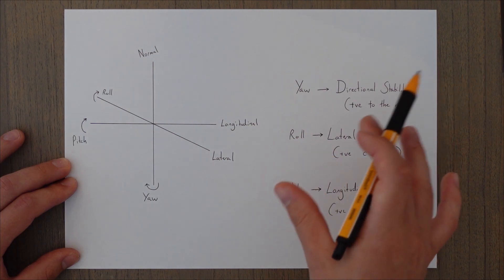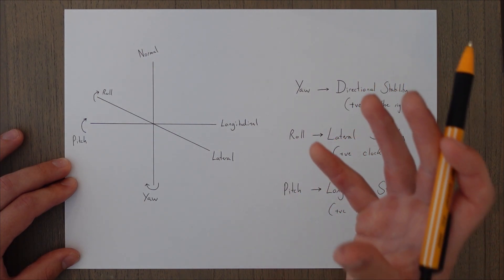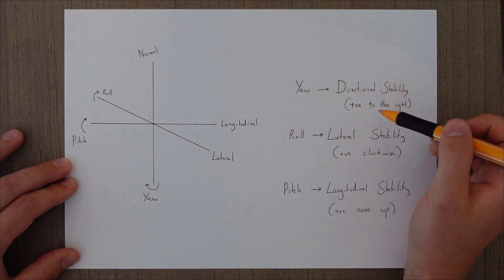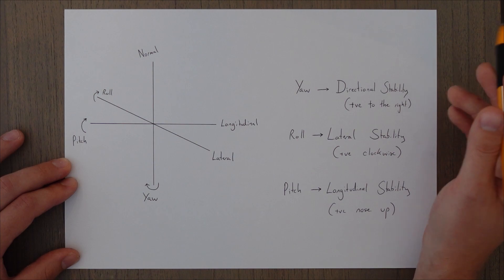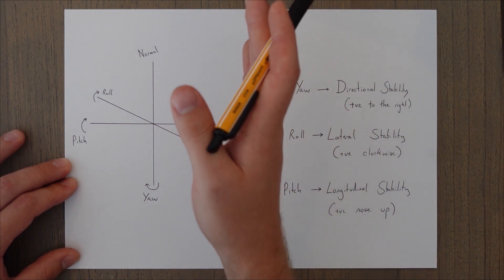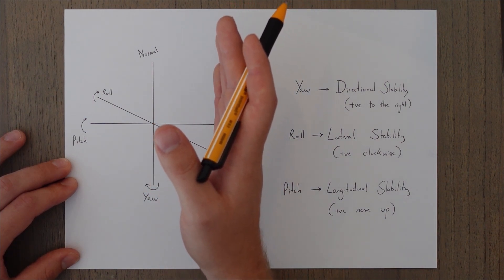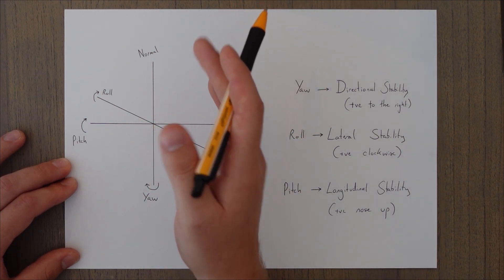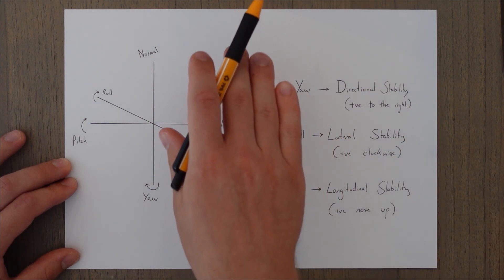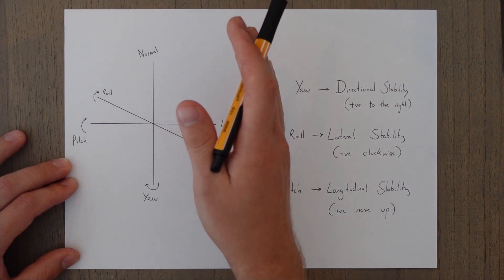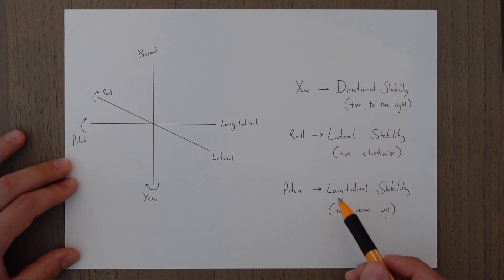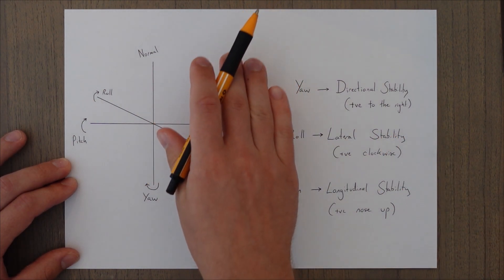In the next class we'll look at stability moments. It's important to note that positive is to the right for directional stability, always from the pilot's perspective. So if heading along and you get a corrective moment to the right clockwise, that's a positive corrective moment. For lateral stability, it's the same — rolling clockwise to the right from the pilot's view is a positive corrective moment. For pitch, positive is nose up.